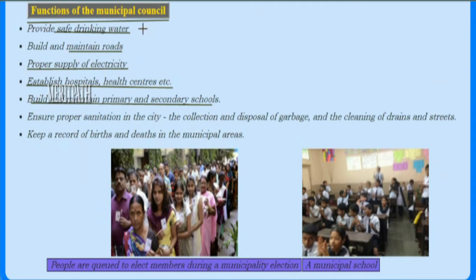Functions of the municipal council include: providing safe drinking water, building and maintaining roads, ensuring proper supply of electricity, establishing hospitals and health centers, building and maintaining primary and secondary schools, ensuring proper sanitation in the city, collection and disposal of garbage, cleaning of drains and streets, and keeping a record of births and deaths in the municipal areas.